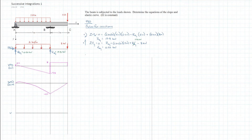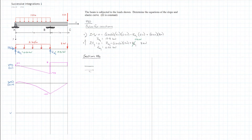We'll start by looking at section AB. We need to draw a partial free body diagram so that we can use the direct method to get an equation for the bending moment. X is positive going to the right from A, we have our support reaction R_AY, and of course our uniformly distributed load.